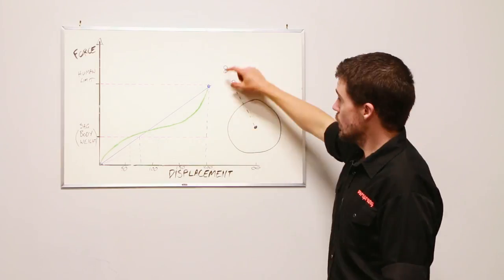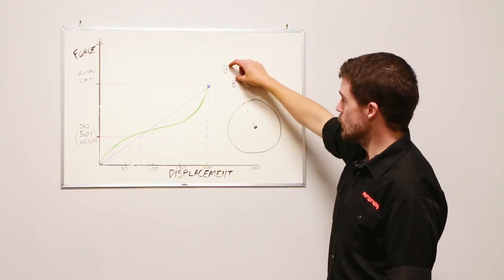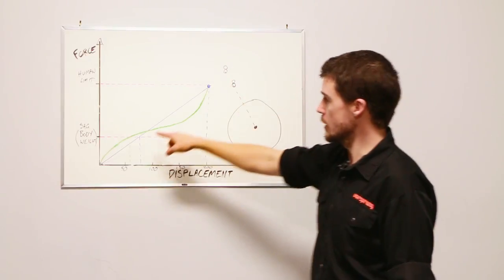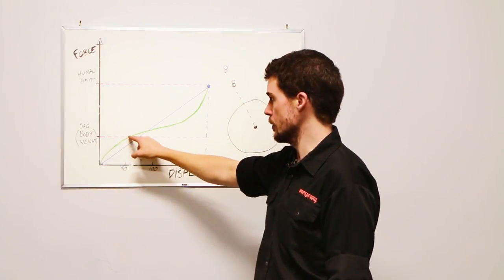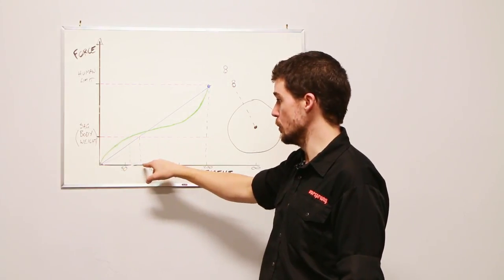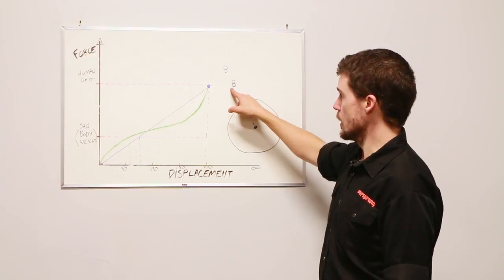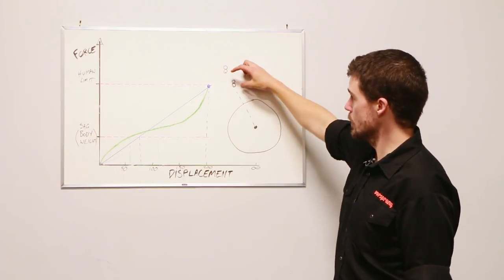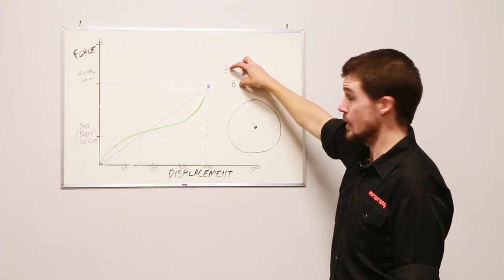Now, for those of you who are subscribed to our Fork and Friday's newsletters, you've already read this part. What this means is that if you change to a system where you run more sag, say, for example, you go from this air spring curve here that crosses the body weight line here, to a coil spring that runs a bit more sag, your handlebars are going to start lower. As a result, for a given amount of displacement here, they're going to end lower.